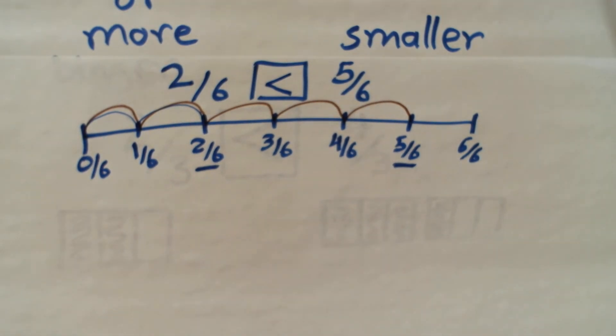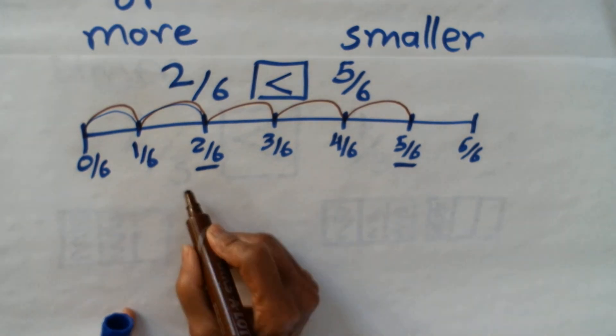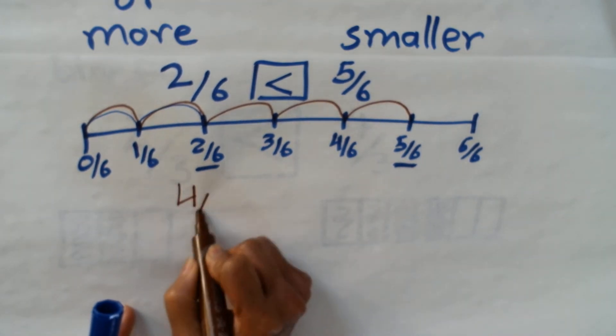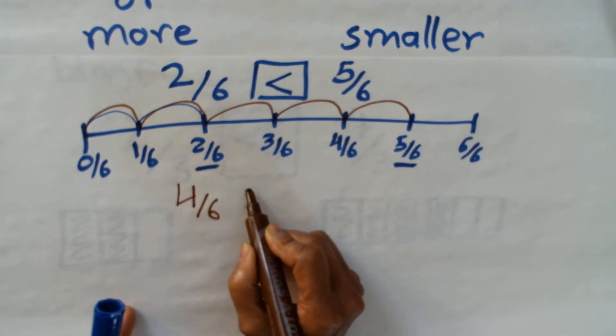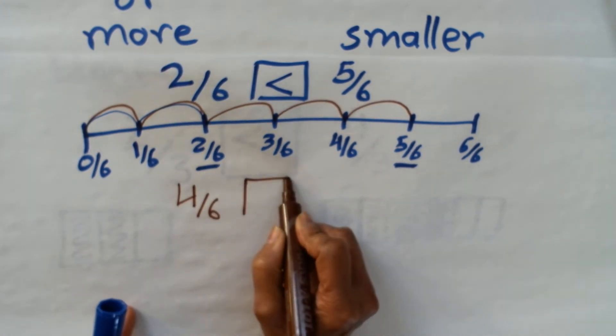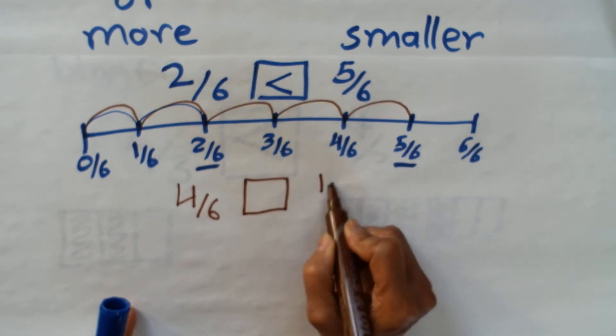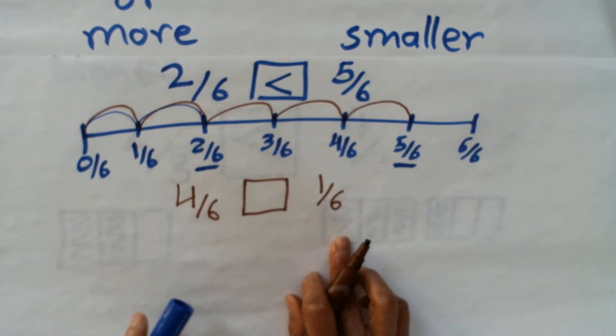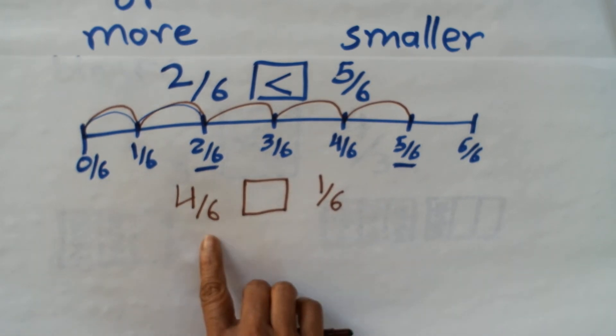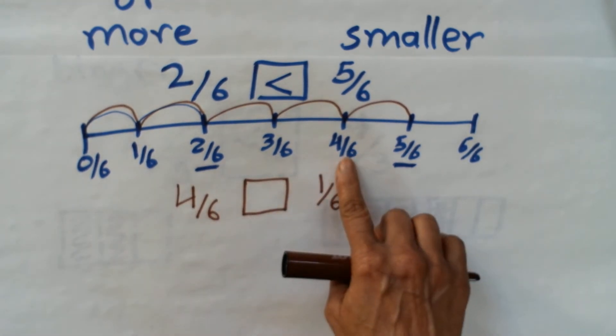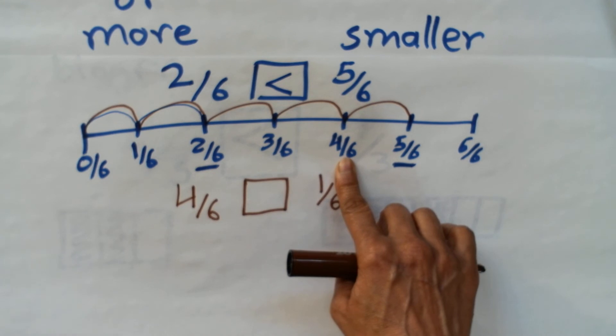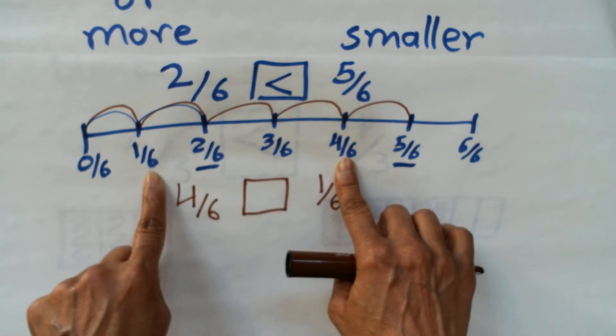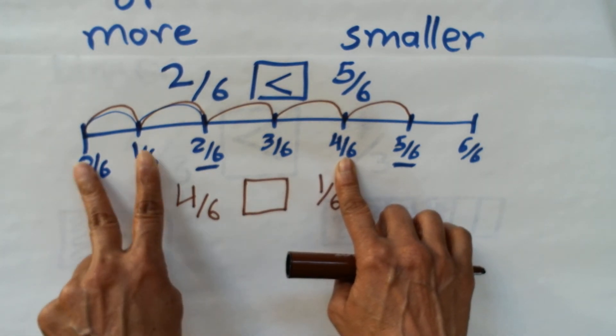Now let's try with another one. Let's compare 4/6 with 1/6. When you compare 4/6 with 1/6, you can see 4/6 is right here and 1/6 is right here.